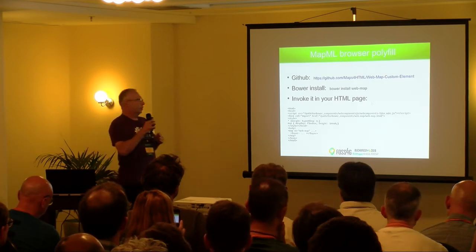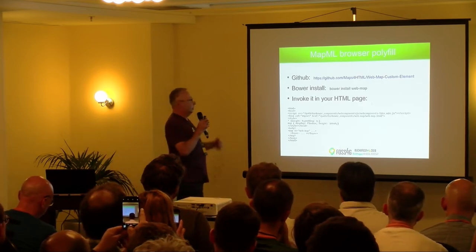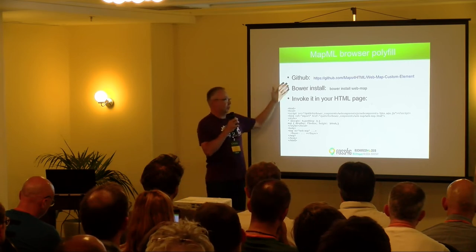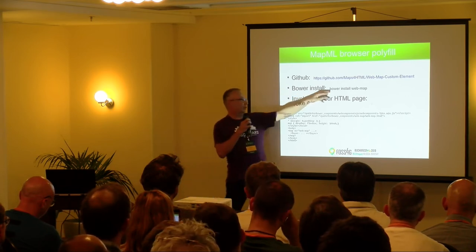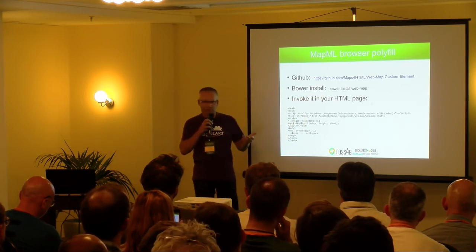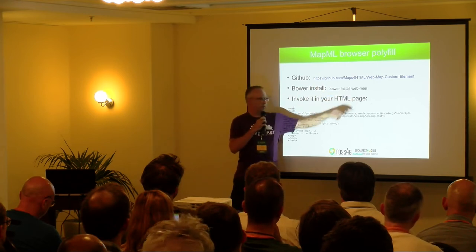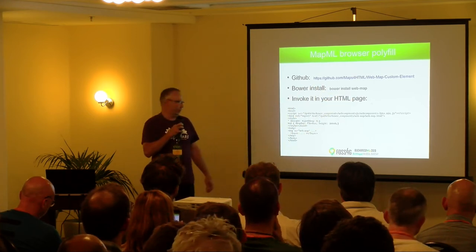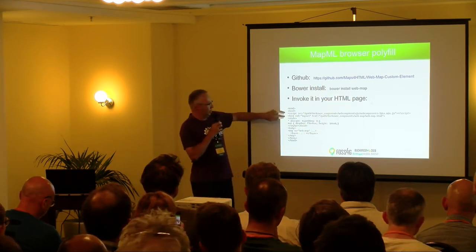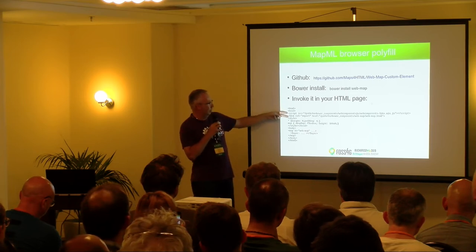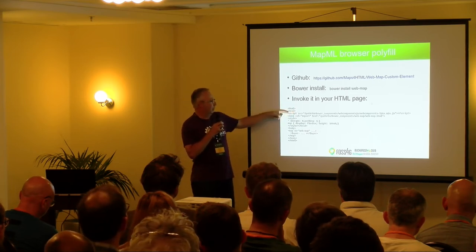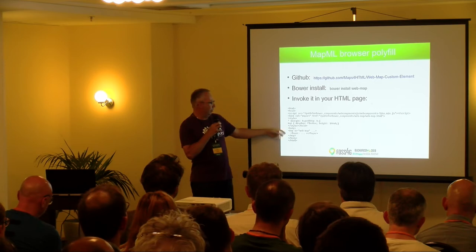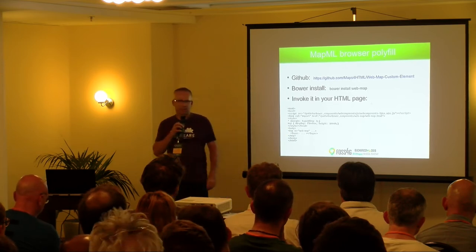I talked about the Leaflet-based polyfill — the implementation of the spec. The way to use it: there's a Bower package for it. Bower is a package manager for JavaScript libraries. Just 'bower install' a web map into a folder and you're going. Then you instantiate it in your web page with those two lines to invoke and instantiate it. Then you plug in your map element and your map shows up. It's as simple as that. The idea is that once there's native browser support, you can get rid of this and all you need is the map element.